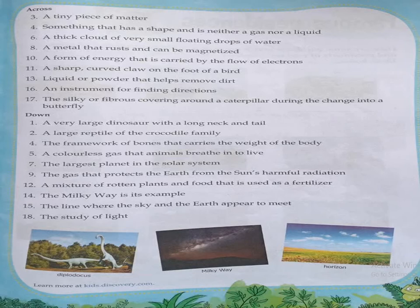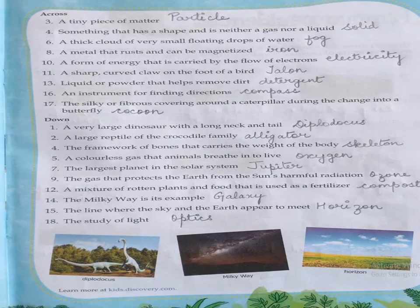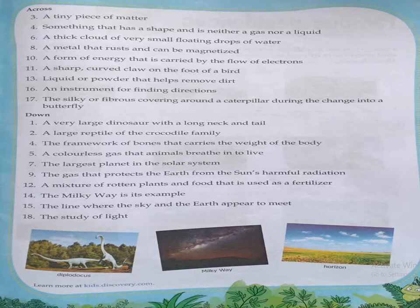The next clue is: a metal that rusts and can be magnetized. That is iron. So to recap, the first one was particle, then solid, then fog, and then iron.